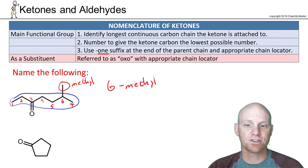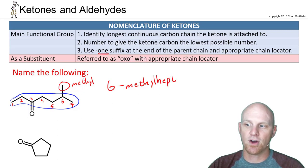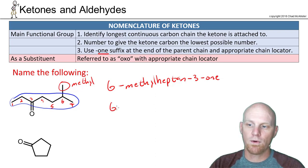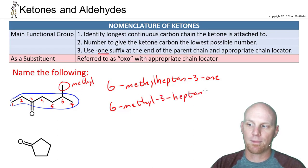You can place the chain locator three in one of two acceptable positions: either right before the suffix — 6-methylheptane-3-one — or in front of the entire parent chain — 6-methyl-3-heptanone. Both are acceptable.